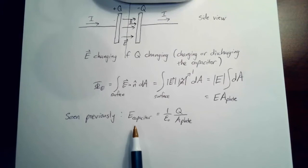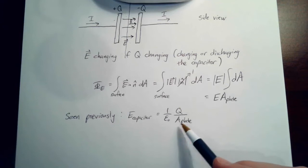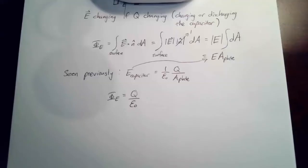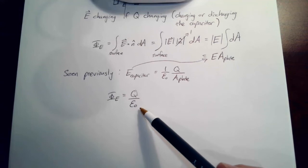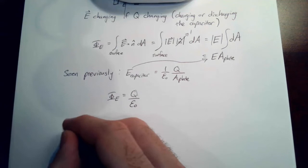We've seen previously that the electric field inside a capacitor is Q divided by ε₀ times the area of the plate. Plugging this in, the area of the plate cancels out, and so the electric flux is simply the charge on the plate divided by the constant ε₀: Φ_E = Q/ε₀.